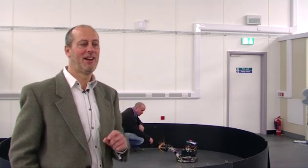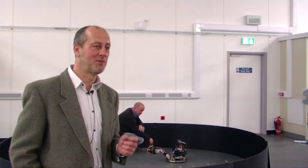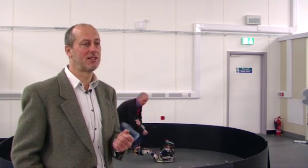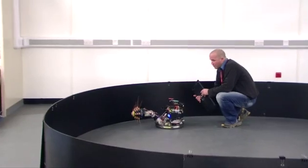The pygmy shrew for example is only about that long and it goes out there hunting crickets that are about the same size as itself and it catches those crickets and disables them and eats them almost entirely by using its whiskers.